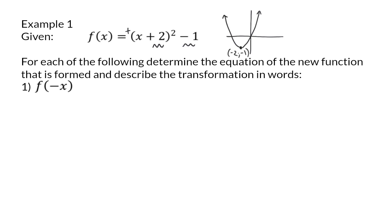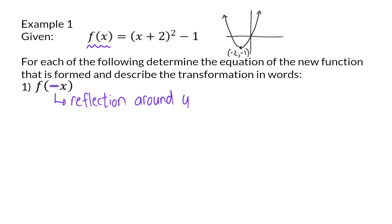This function will now undergo certain transformations, and the first of that is given by f of minus x. Here you can see that the only change from the original function to the new function is that x's sign changed. This change indicates that this is a reflection around the y-axis. In our sketch, the graph will be folded on the y-axis, and the new graph will now be turning to the right of the y-axis. This means that the turning point will now be at plus 2, because x's sign changed, and still at minus 1, because the y-value stays the same.